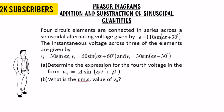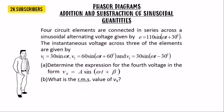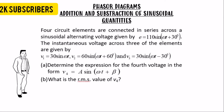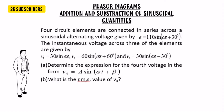We have a question given to us that we'll use to understand how we can add and subtract sinusoidal quantities. Four circuit elements are connected in series across a sinusoidal alternating voltage given by e = 110 sin(ωt + 30°).